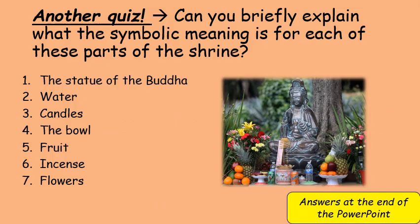Here is another quiz to go over what you learned last lesson. It says: briefly explain the symbolic meaning for each of these parts of a shrine. Look at each part and explain what the statue means, why the water is there, and so on. Write them down one to seven with the meanings next to them. If you can't answer one, leave it blank, and at the end of the PowerPoint you'll see what you need to go back and revise.